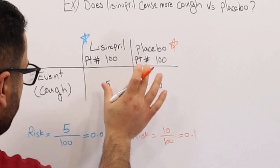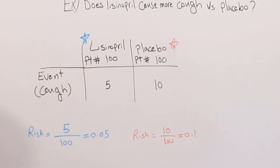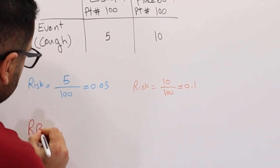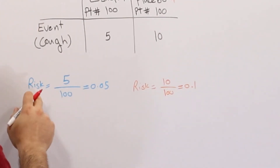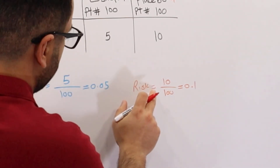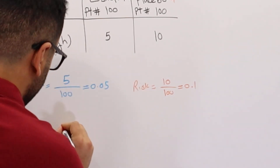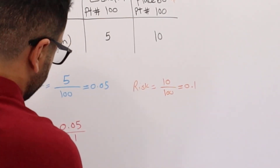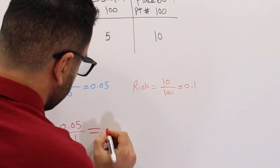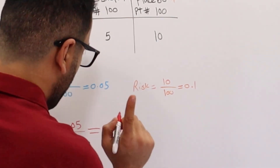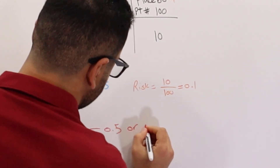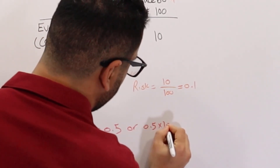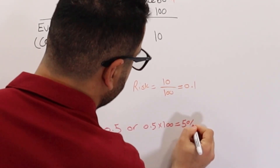Now I have the risk for both groups, so I can calculate relative risk. Relative risk is the risk in the treatment group over the risk in the placebo. So here we have 0.05 over 0.1, and the answer is 0.5. We can multiply by 100 to express this as 50%.